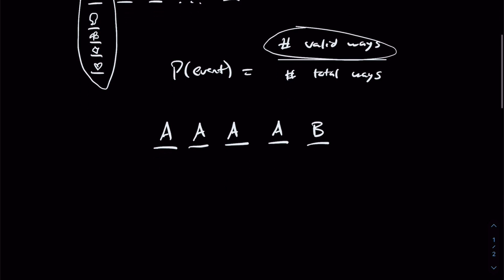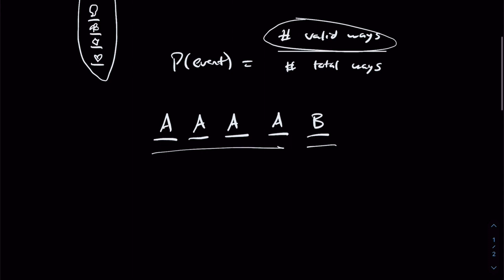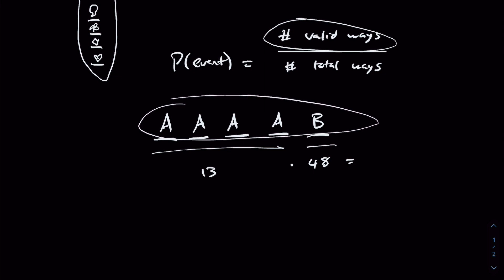We have one rank A and one rank B. These A's can only take on 13 possible different values because there are only 13 different ranks. So we write 13 because there are 13 options to choose these first four cards from. And once we've done that, there are 48 remaining cards from which any of them are valid to choose our fifth card. Multiplying this across gives us the total number of valid ways: 624.